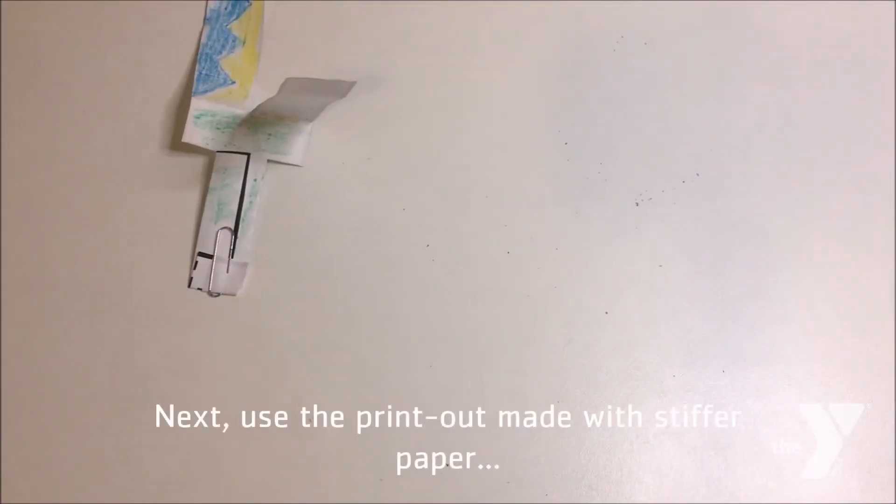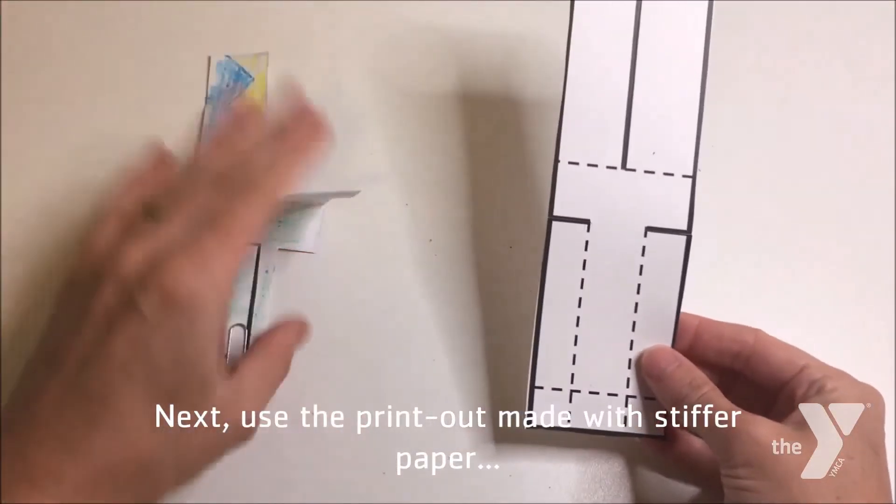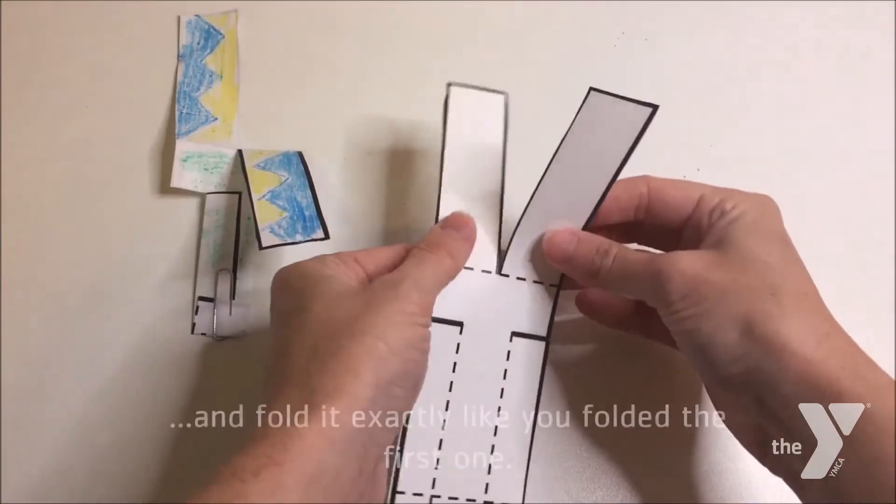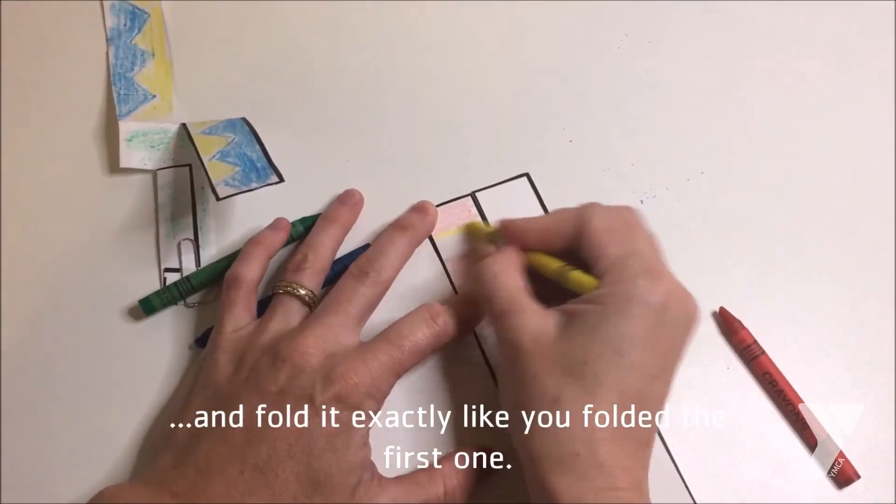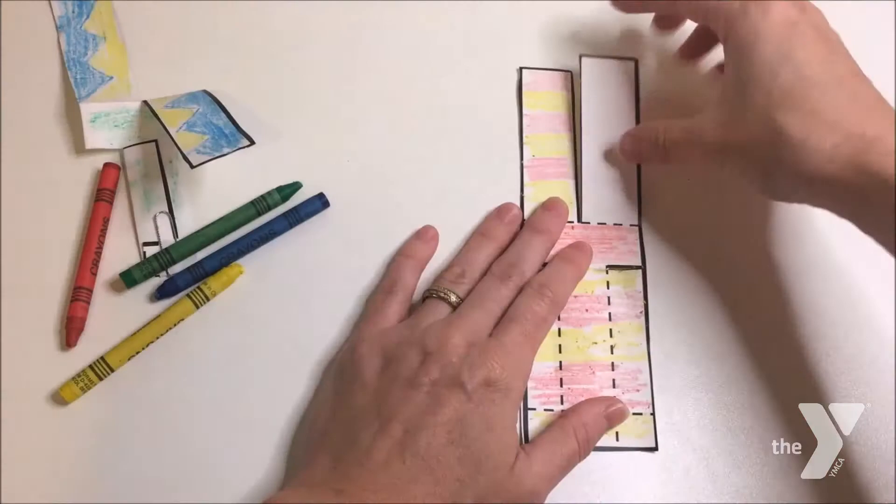After that, use the printout that's made with stiffer paper and fold it exactly as you did with the first one. What effect do you think that the thicker, heavier paper will have on your drop copter?